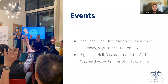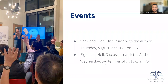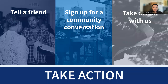We have two upcoming events — both book club discussions. You don't have to have read the book to join; they're pretty general and you get to discuss the topic at large with the authors. The first is Seek and Hide, next week from 12 to 1 p.m., a webinar-style discussion around privacy and digital surveillance. The next is Fight Like Hell, which covers labor. If you're interested in either, I can send a follow-up link with registration info. You can tell a friend, sign up for a one-on-one with me, or take action on our legislation.